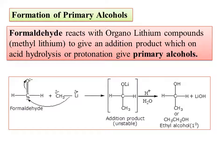For synthetic applications, to prepare a primary alcohol, formaldehyde is made to react with an organolithium compound. In between, you get an adduct. The adduct is highly unstable, and unstable molecules are written in square brackets. The mechanism of organolithium is that it carries a slight positive charge on lithium and a slight negative charge on carbon.